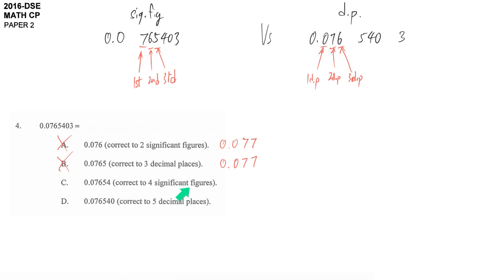Part C. About 4 significant figures. And then we stop here and we check what behind is less than half so we don't change. It's 0.07654. And then we don't change the last digit. So this seems consistent. C should be our answer.